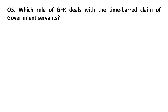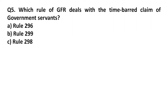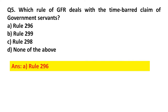Question 5: Which rule of the GFR deals with the time-barred claim of a government servant? Option A: Rule number 296. Option B: Rule number 299. Option C: Rule number 298. Option D: None of the above. Answer: Rule number 296.